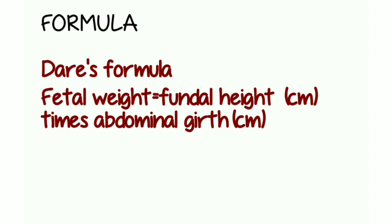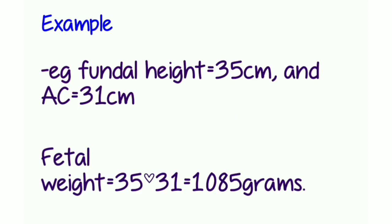Let me give you an example. If you have a fundal height of 35 centimeters and an abdominal circumference of 31 centimeters, then your approximated fetal weight is 35 times 31, which is equivalent to 1,085 grams. That is how you estimate your fetal weight.